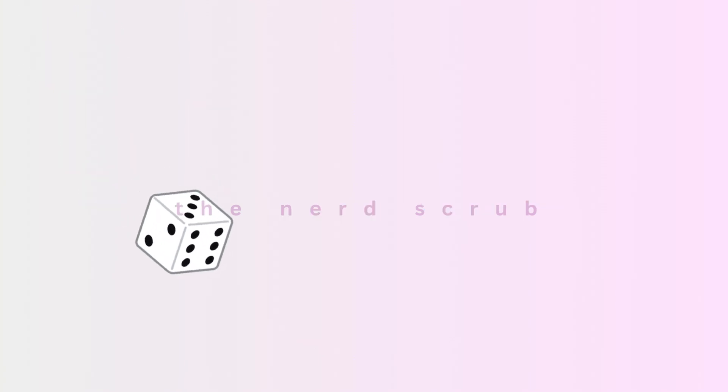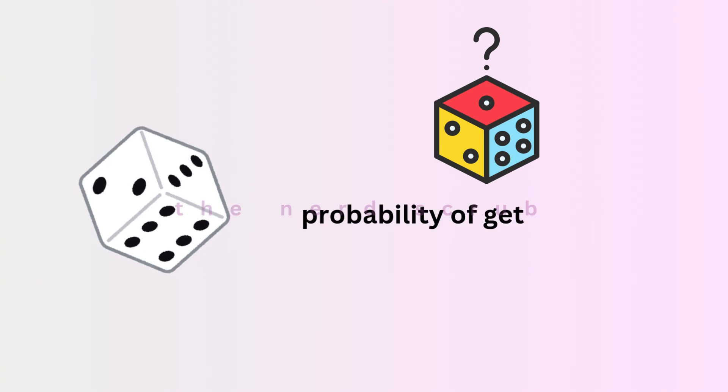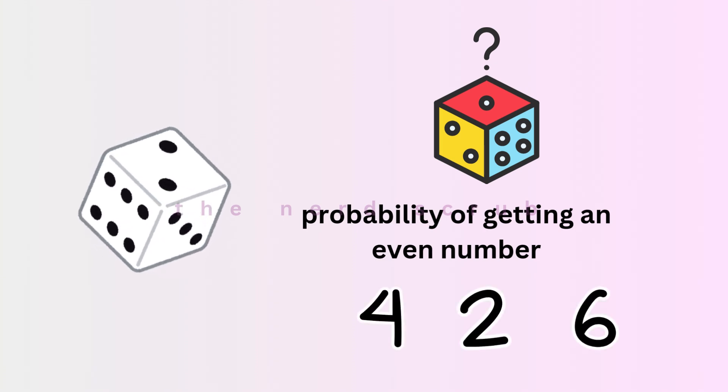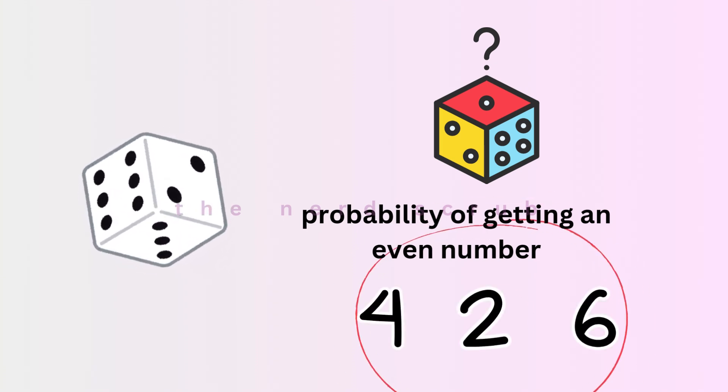Imagine you roll the die, and you're curious about the probability of getting an even number. The even numbers on the die are two, four, and six. So there are three favorable outcomes.